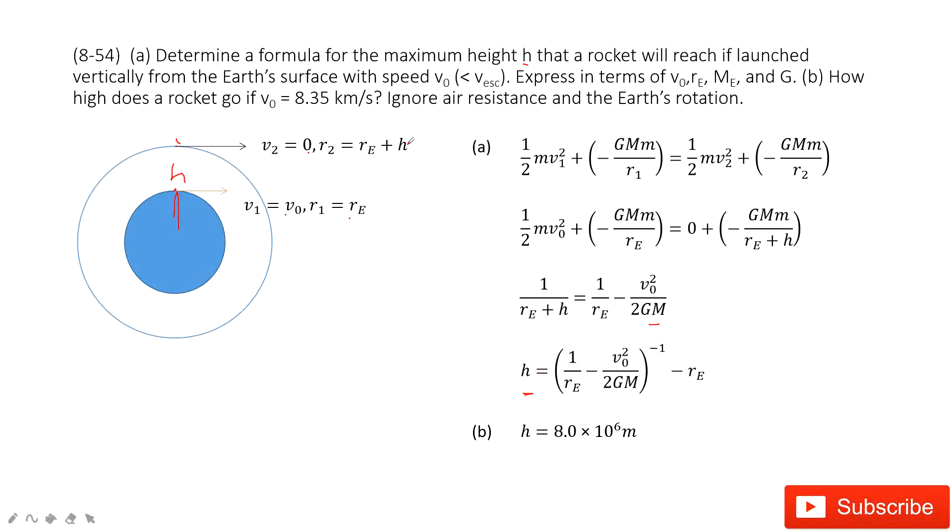For the next one, if the initial velocity is given, can you find h? Sure, very easy. Re is given, G is a constant, M is given, M is a constant. So you just input V0 inside and you'll get the final answer. Thank you.